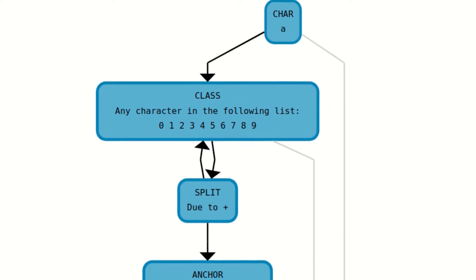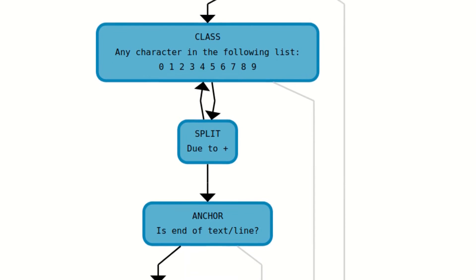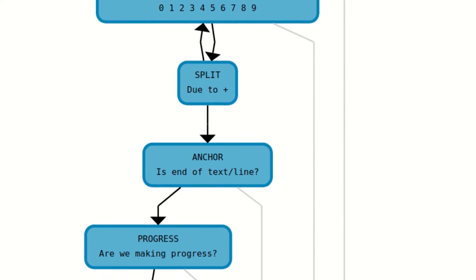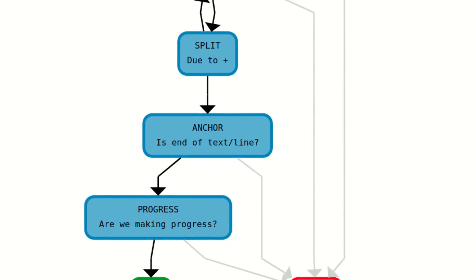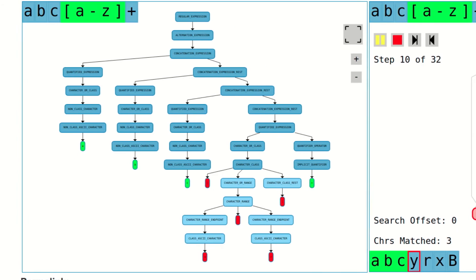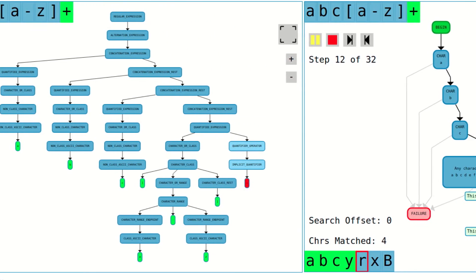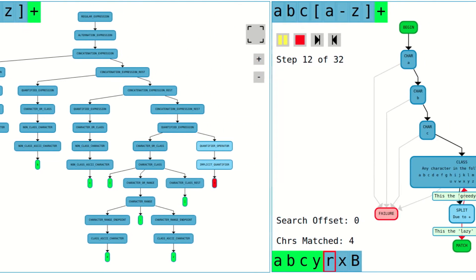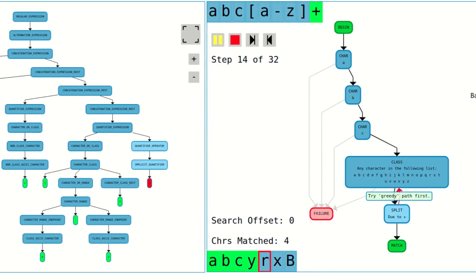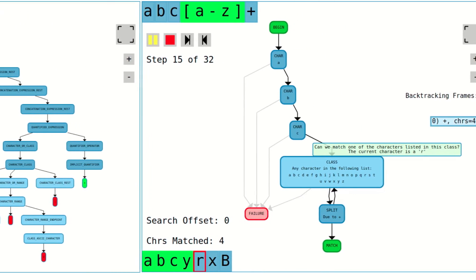You may find it surprising, but most commonly used regular expressions can be described in terms of these five simple node types. The primary purpose of this visualization tool is to help you understand the precise meaning of the characters in a regular expression.